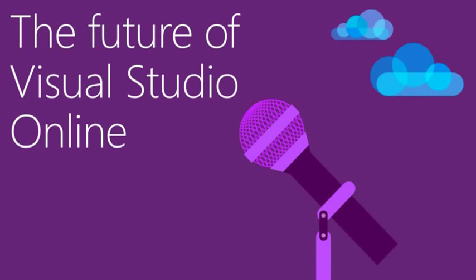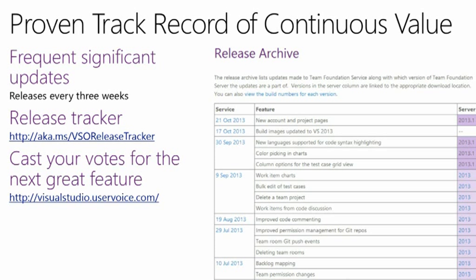We've really transformed the way we deliver software at Microsoft. With Visual Studio Online we have a proven track record of delivering continuous value over time — we deliver a new release roughly every three weeks, around our sprint boundaries. You can go back to our release tracker to keep track of what new features we've been introducing in each release. We also really do listen to feature requests from our customers and take those into our backlog pretty quickly. Head over to User Voice, let us know, and vote on popular feature requests you're interested in. We'll continuously introduce new functionality, and we're only getting started.